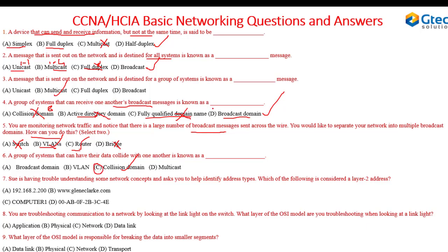To summarize: this one is broadcast domain, this was multicast, this was broadcast, this was half duplex, and this was router and VLAN.